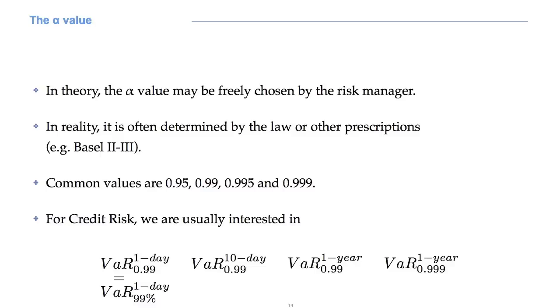For credit risk, we are usually interested in the VARs you see on screen. The most used alpha levels are 99% and 99.9%. The most frequent time horizons are 1 day, 10 days and 1 year. In particular, the 1 year value at risk at 99.9% confidence level is fundamental when defining the capital requirements for the banking book.